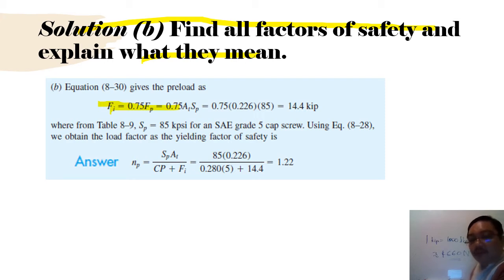Now we have all the tools required, whether dealing with USA customers, British customers, or customers using the metric system. From Table 8-9, the strength of the load is 85 ksi for SAE grade 5. Using equation 8-25, the load factor np equals this. Remember what is a load factor.